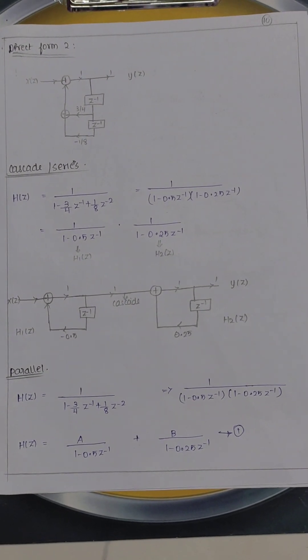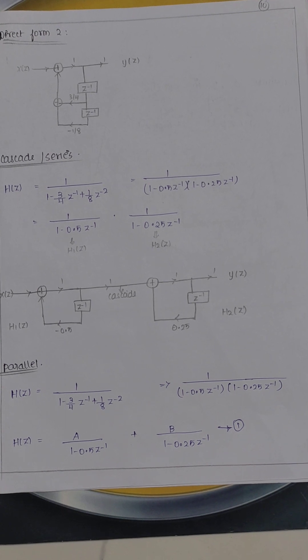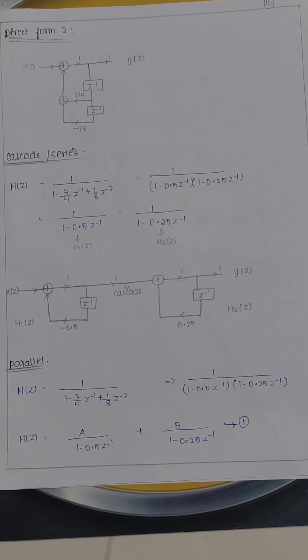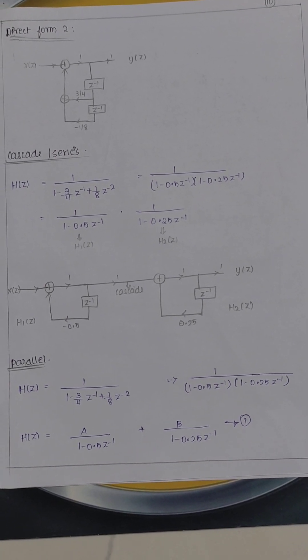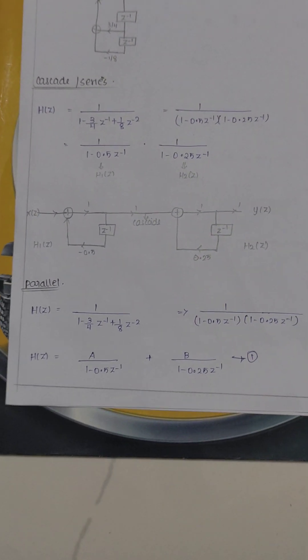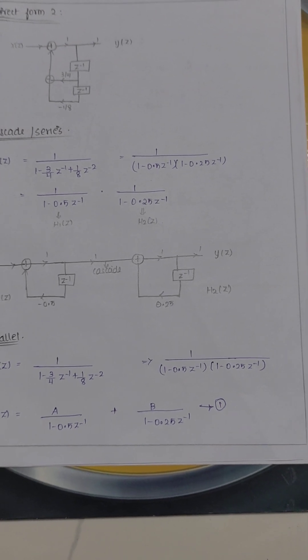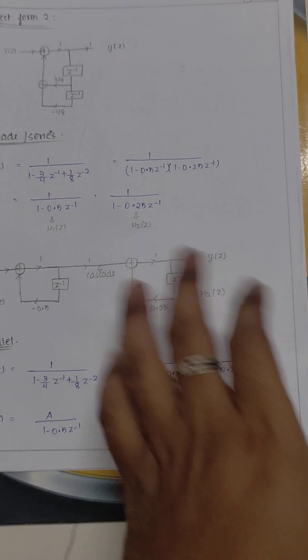Next case, parallel form. H(z) equals 1 divided by 1 minus 3 by 4 z inverse plus 1 by 8 z power minus 2, which equals 1 minus 0.5 z inverse into 1 minus 0.25 z inverse. You have to go with the partial fraction method. Therefore, it splits into two terms: A divided by 1 minus 0.5 z inverse plus B divided by 1 minus 0.25 z inverse.